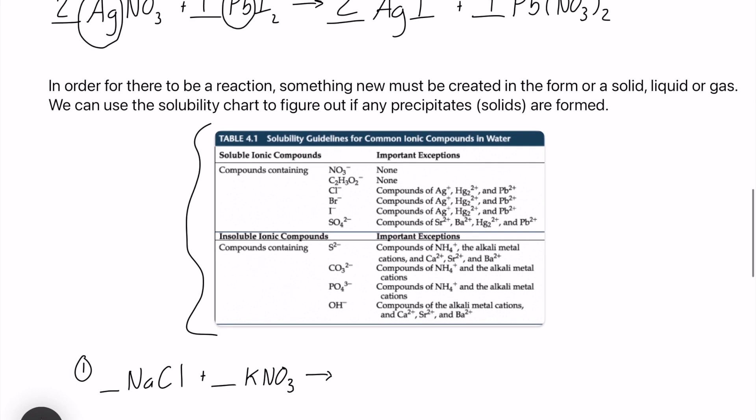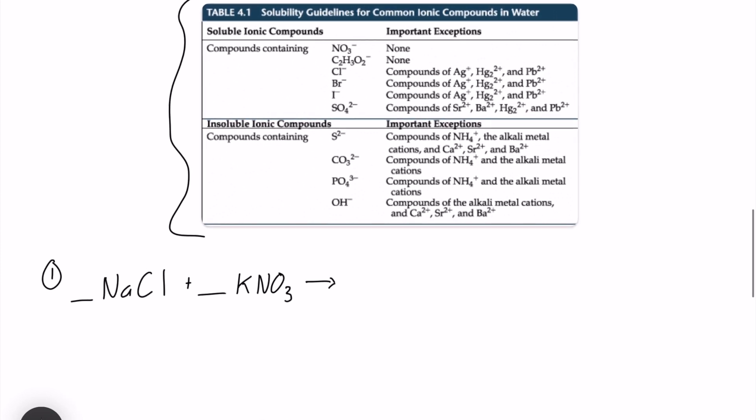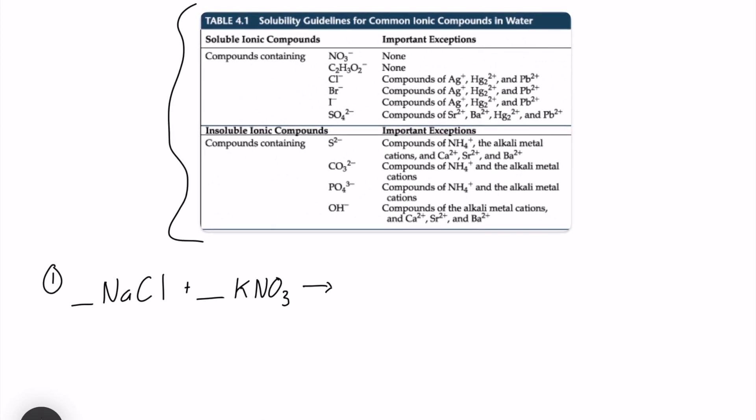So why don't we take a look at example number one here. We have sodium chloride and potassium nitrate reacting. And remember, we just have our cations switching places. So silver and potassium are going to switch anions. So let's write down our compound containing sodium first. So we are going to have sodium nitrate. So we have NaNO3. We're also going to have potassium chloride. So we have K and then Cl.